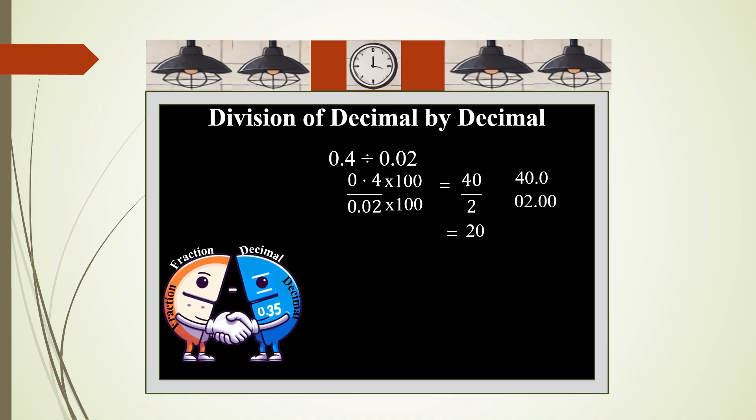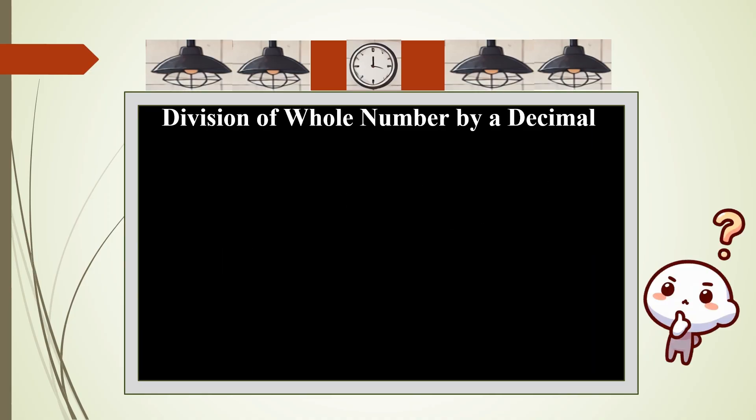Next is division of whole number by a decimal: 2 divided by 0.4. We will convert this as a fraction, 2 divided by 0.4. Since it has only one place of decimal in the denominator, you multiply both the numerator and the denominator by 10. 2 times 10 is 20. 0.4 times 10 is 4. So this comes out to be 20 by 4, which is equal to 5.